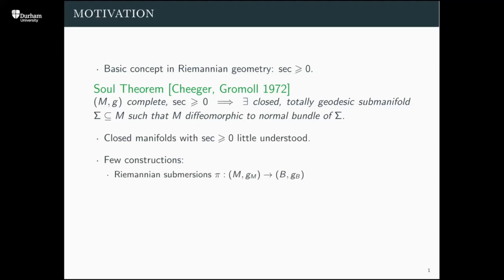All of the constructions I'm aware of depend on two basic facts. The first is that Riemannian submersions are curvature non-decreasing: a Riemannian submersion is a submersion that is an isometry orthogonal to the fibers, and being curvature non-decreasing means that if you have non-negative curvature upstairs then you automatically get it on the target space. The second basic fact is that compact Lie groups admit bi-invariant metrics — you can compute the curvature of a bi-invariant metric and it's always non-negative.